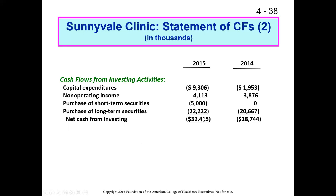They also spent $22,222,000 to purchase long-term securities. They converted cash into long-term securities — the organization still has resources, it's just that the cash has been converted into a long-term investment. When we total all that up, we get our net cash from investing.